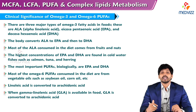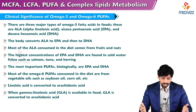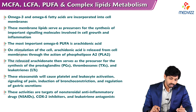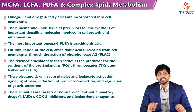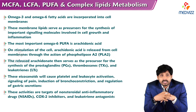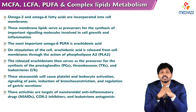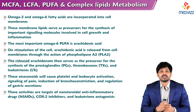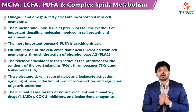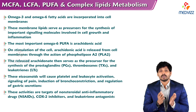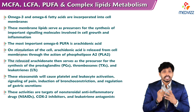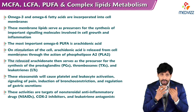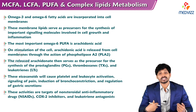Linoleic acid is converted to arachidonic acid, and when gamma-linolenic acid is available in food, it is also converted to arachidonic acid. Omega-3 and omega-6 fatty acids are incorporated into cell membranes, where these membrane lipids serve as precursors for synthesis of important signaling molecules involved in cell growth and inflammation. The most important omega-6 polyunsaturated fatty acid is arachidonic acid. On stimulation of the cell, arachidonic acid is released from cell membranes through the action of phospholipase A2. The released arachidonate serves as a precursor for the synthesis of prostaglandins, thromboxanes, and leukotrienes, which play roles in inflammation, platelet and leukocyte activation, signaling of pain, induction of bronchoconstriction, and regulation of gastric secretions.